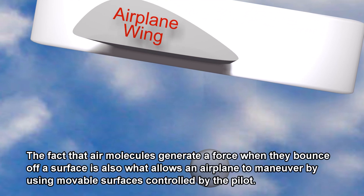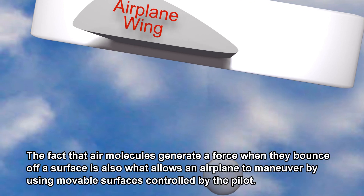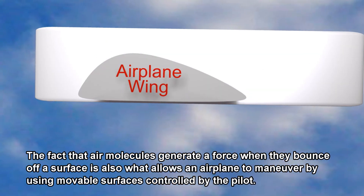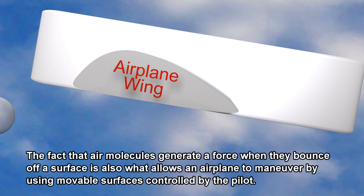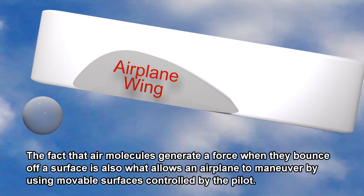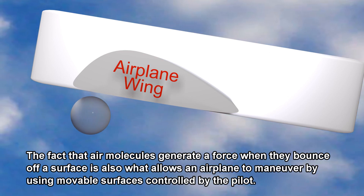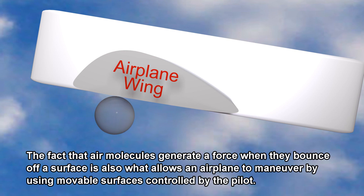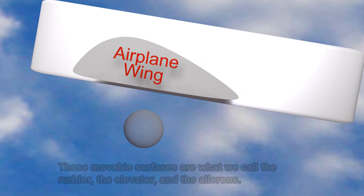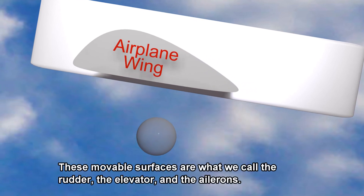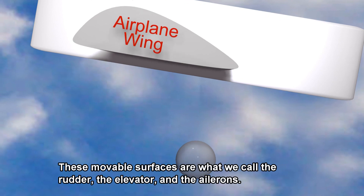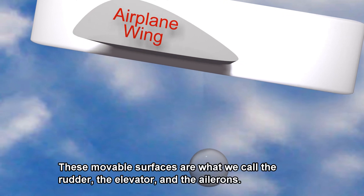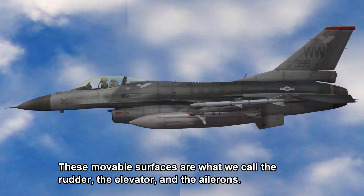The fact that air molecules generate a force when they bounce off a surface is also what allows an airplane to maneuver by using movable surfaces controlled by the pilot. These movable surfaces are what is called the rudder, the elevator, and the ailerons.